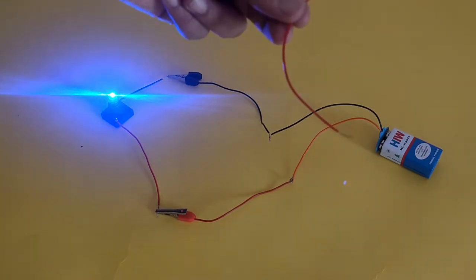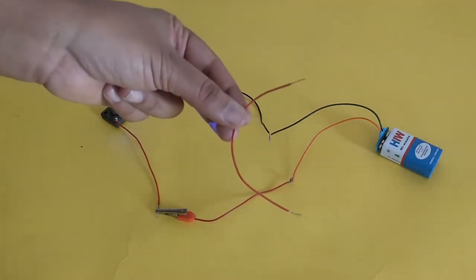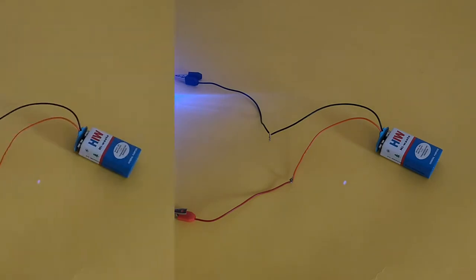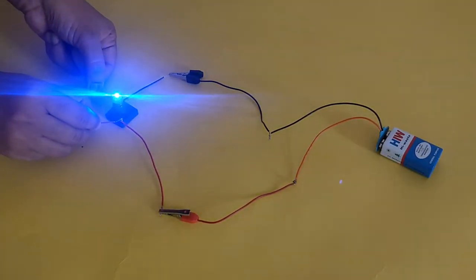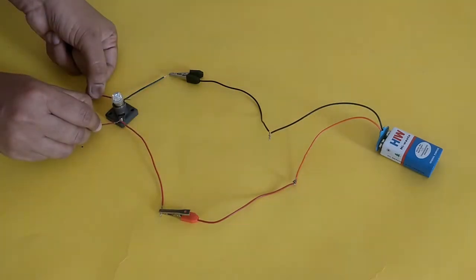Now take the insulated wire and touch its two ends to the two terminals of the torch bulb mount. You will notice the torch bulb stops glowing.